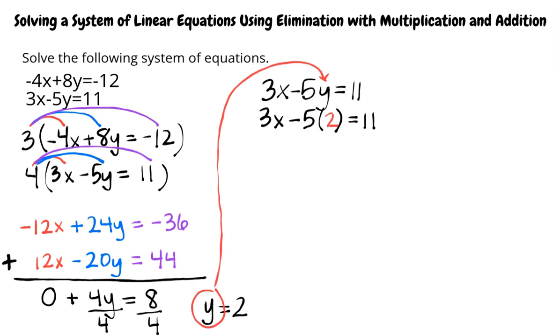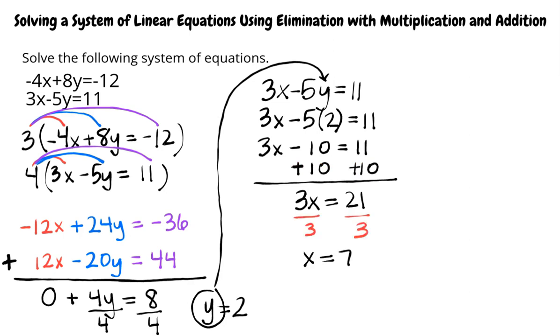We get 3x minus 5 times 2 equals 11. Negative 5 times 2 is negative 10, so we have 3x minus 10 equals 11. Adding 10 to both sides of the equation, we write 3x equals 21. Last, we divide both sides of the equation by 3 and write x equals 7.